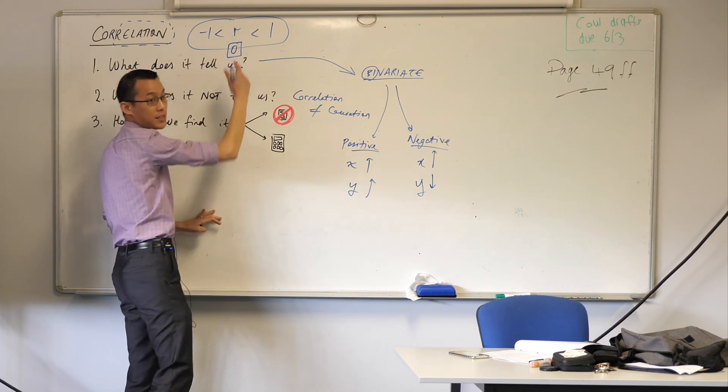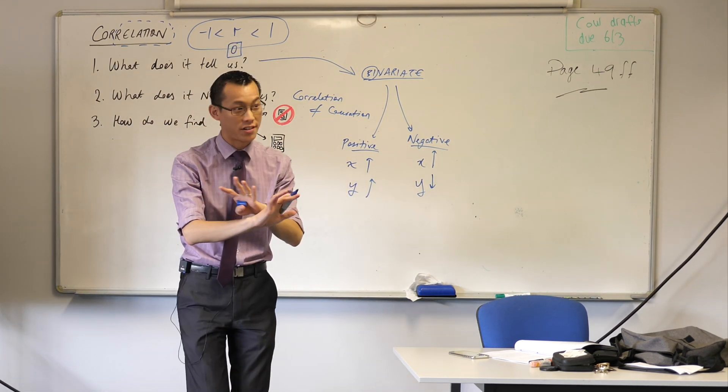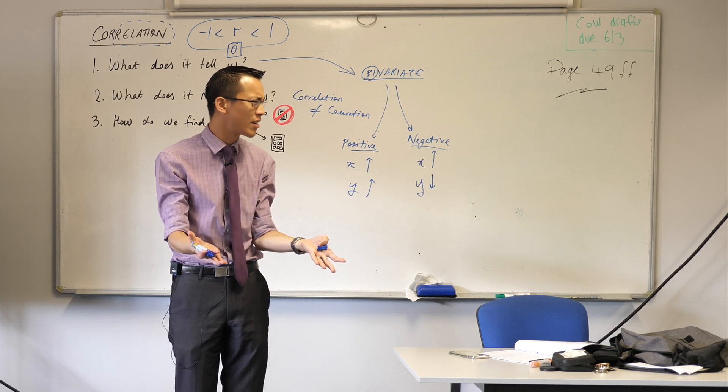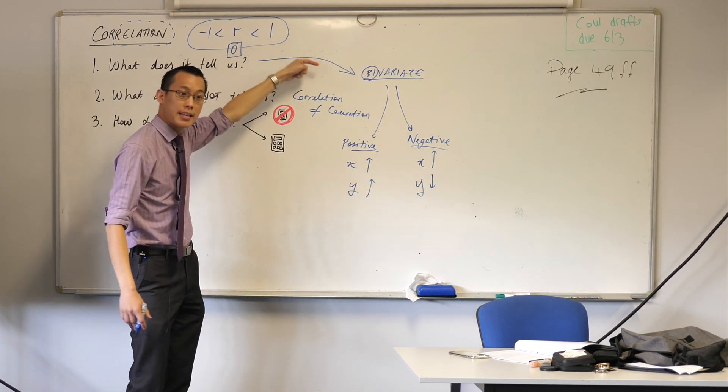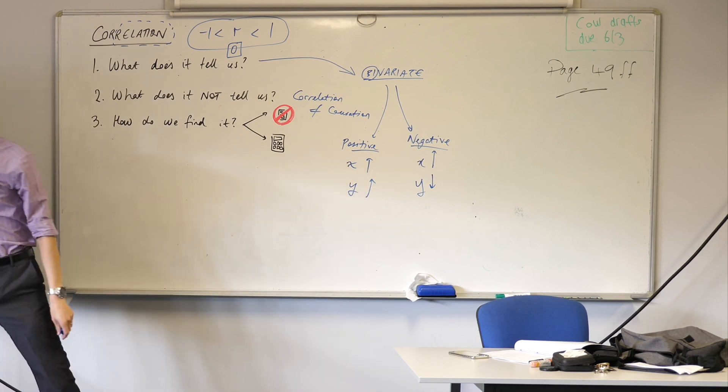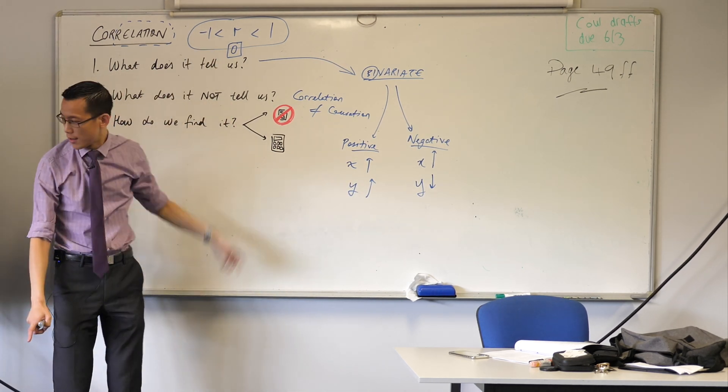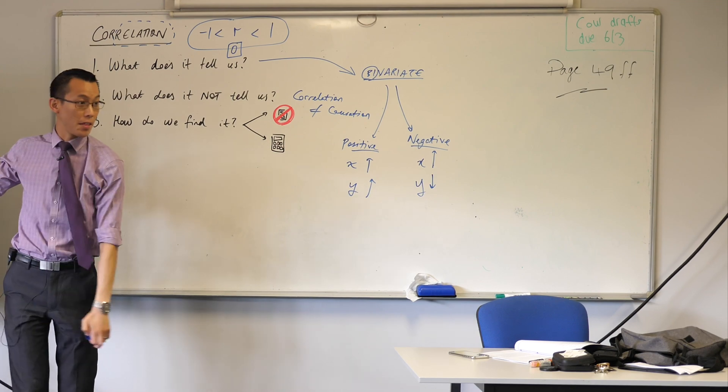Zero. If you had a correlation of zero, what does this mean? They're not correlated at all. Does that make sense? So the more you are down this end, the closer you are to something like this. And the further, the more negative you are, the closer you are to something like this.